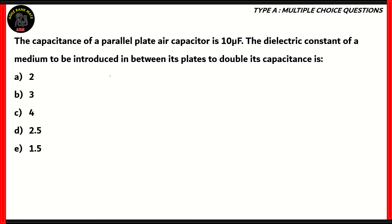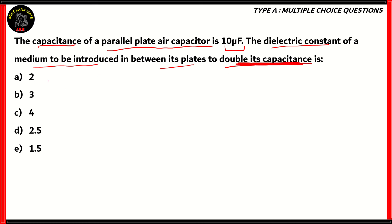Next question. The capacitance of a parallel plate air capacitor is 10 microfarads. The dielectric constant of a medium to be introduced between its plates to double its capacitance is: 2, 3, 4, 2.5, or 1.5. We have a parallel plate capacitor whose original capacitance is 10 microfarads. A dielectric medium is added with dielectric constant K. We need to find the value of K such that the new capacitance C' equals 2C.